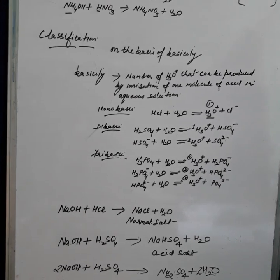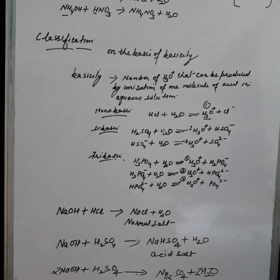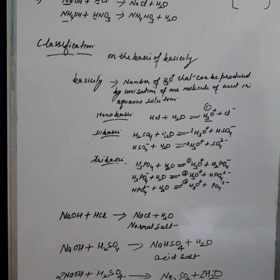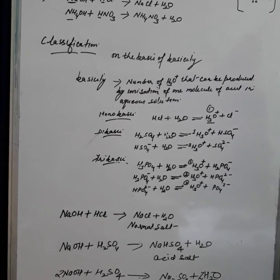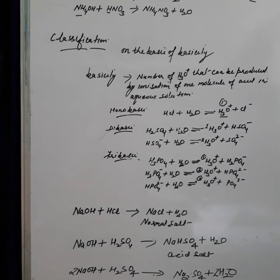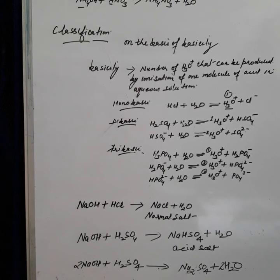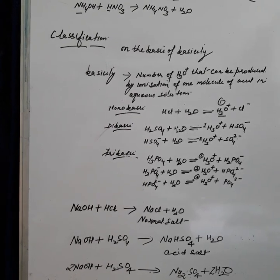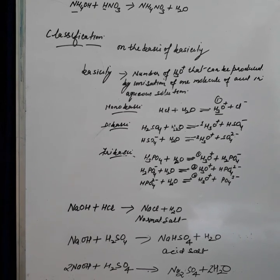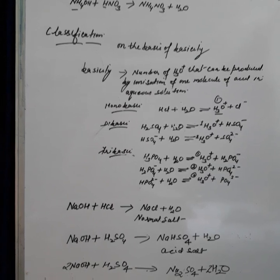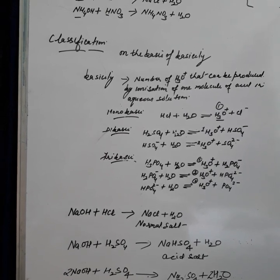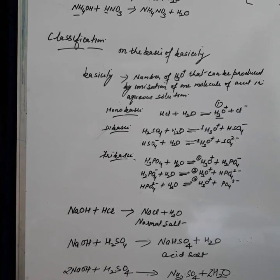In terms of hydronium ion, acids are those compounds which when dissolved in water furnish hydronium ion as the only positively charged ion. Also, all acids contain replaceable or ionizable hydrogen atoms that can be replaced by a metallic radical or ammonium radical — ammonium radical being an electropositive radical.